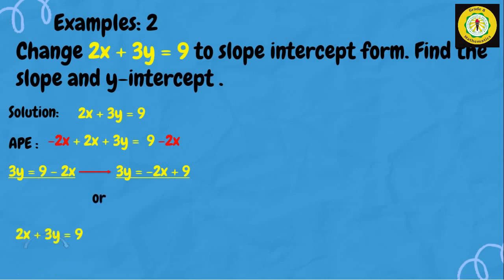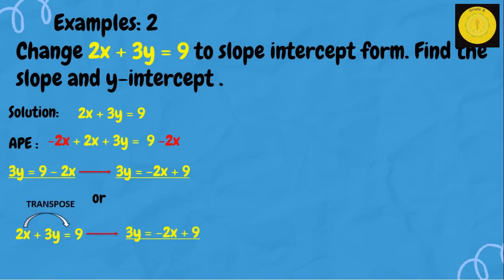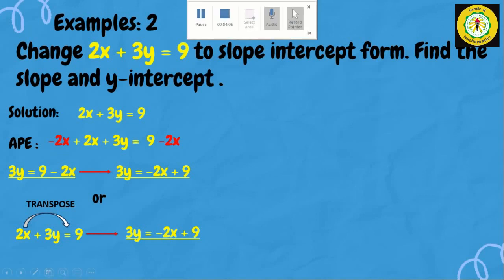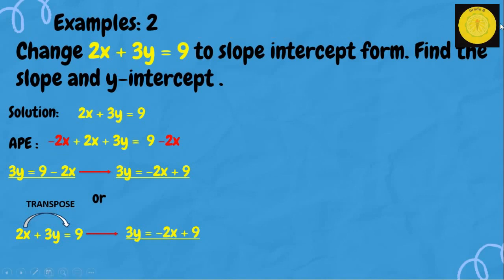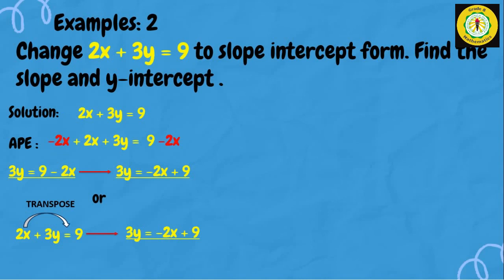The easiest way is using the transposition method to isolate y. We transpose 2x from the left side to the right side, giving us 3y equals negative 2x plus 9. Remember, when transposing, the sign changes — so positive 2x becomes negative 2x.